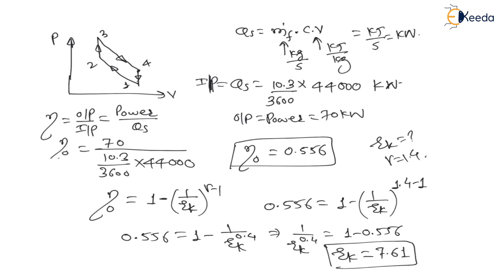So my dear students, in fill in the blanks we have to type 7.61 because they have mentioned up to 2 decimal places. Thank you dear students. In the next lecture we will see one more numerical on Otto cycle.